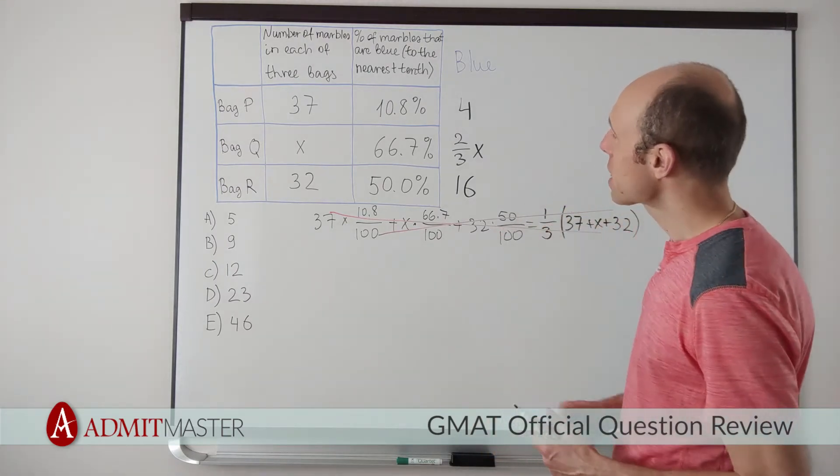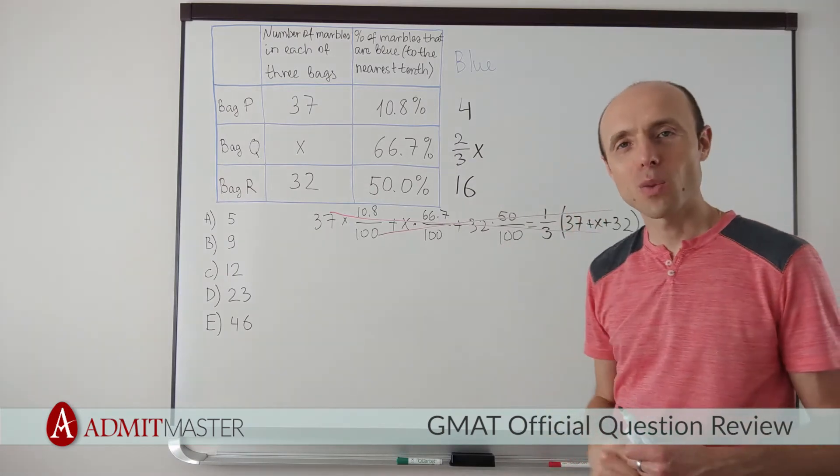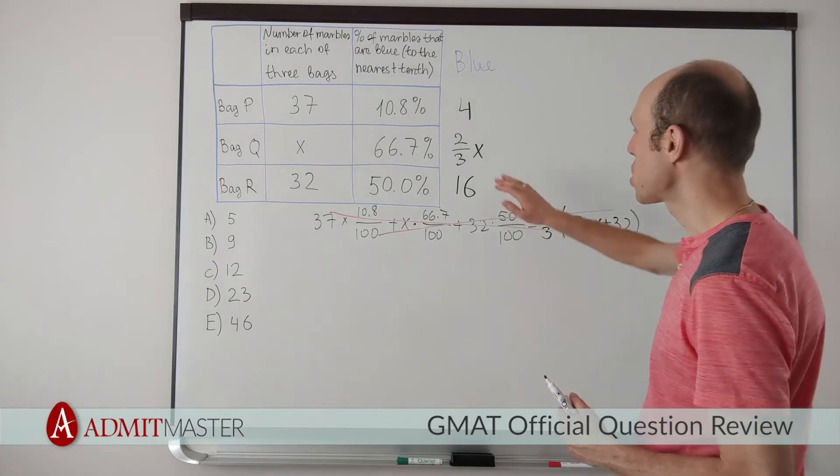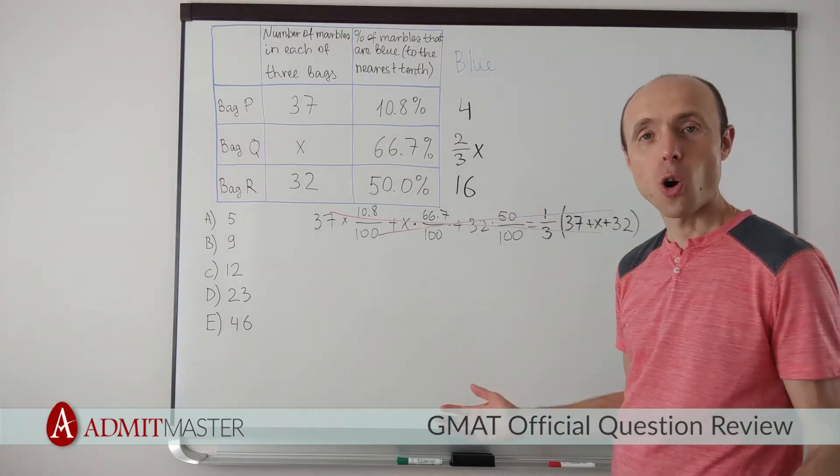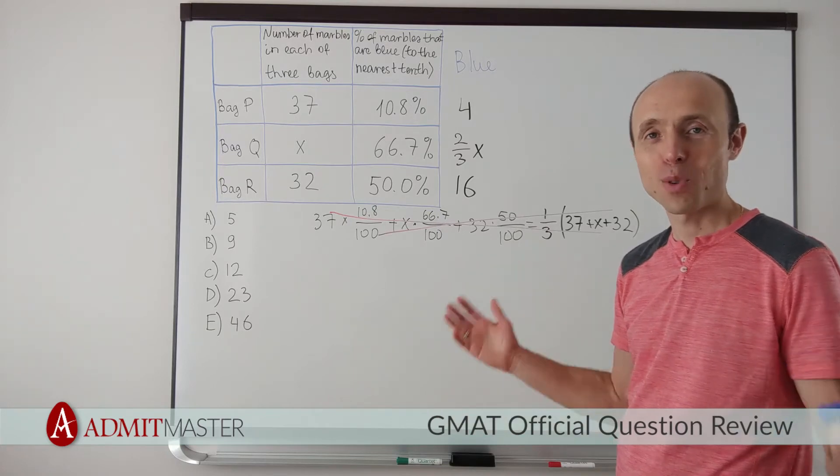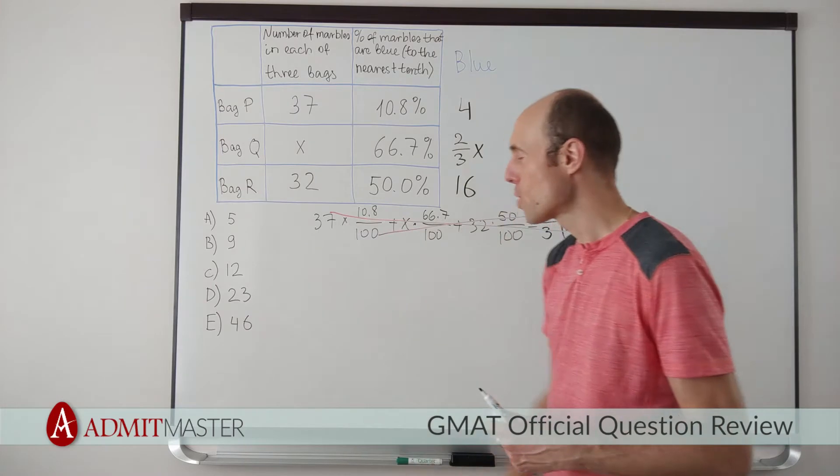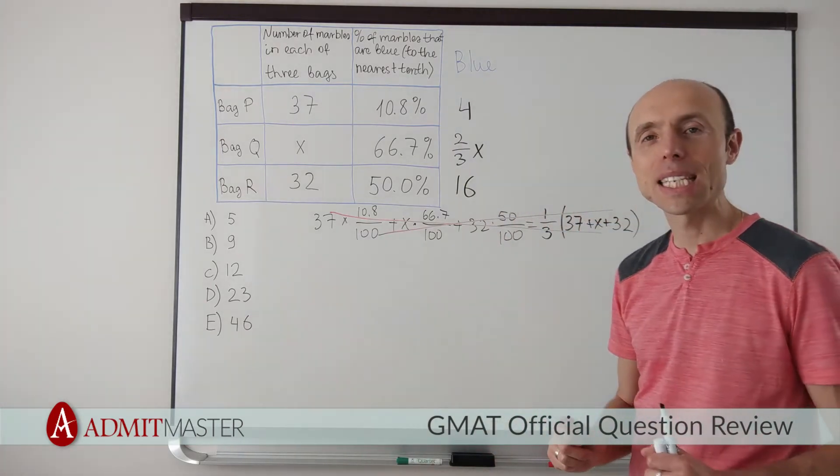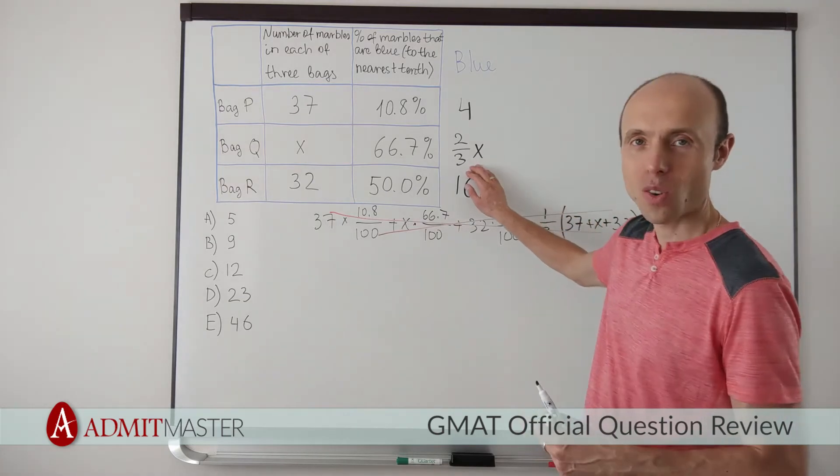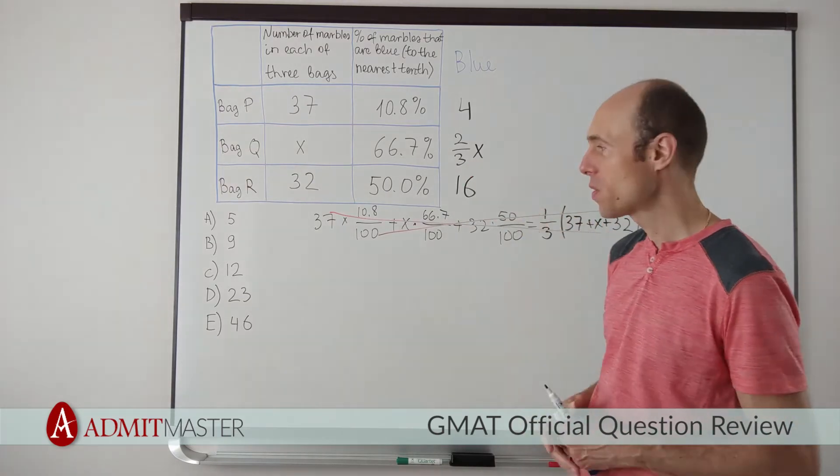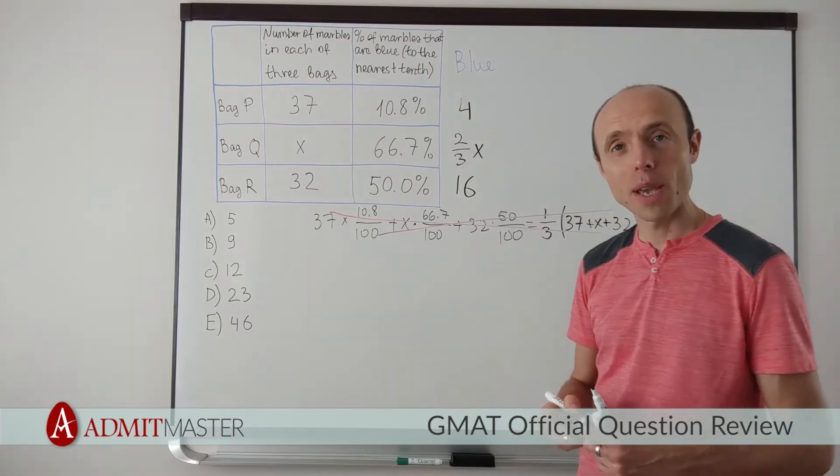When I look at the work that I've just done, there's something important I would have noticed. And that is that 2 thirds of x is a whole number, because the number of blue marbles has to be a whole number. And if x is among the answer choices, then I would immediately see that the right answer has to be divisible by 3. It has to be a multiple of 3. What answer choices are multiples of 3? Well, not too many. Actually,